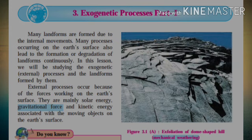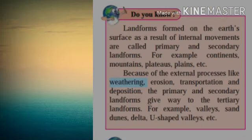External or exogenetic processes occur because of the forces working on the earth's surface. As you know, the different types of forces, i.e. natural forces, always affect the surface of the earth. These forces mainly are solar energy and gravitational force, along with kinetic energy associated with the moving objects on the earth's surface. Landforms formed on the earth's surface as a result of internal movements were covered in the last chapter of geography, where we learnt about the endogenetic movements.